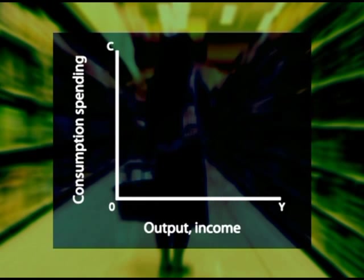We can illustrate this consumption function as a graph. The horizontal axis reflects the level of income, Y, and the vertical axis, consumption spending, C.